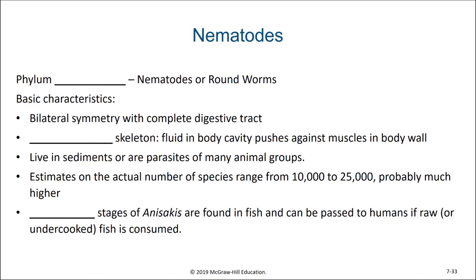Our next phylum of worms are the nematodes, phylum Nematoda. Most nematodes are very small, although some parasitic varieties can be large enough to see and dissect. They are bilaterally symmetrical with a complete digestive system and a hydrostatic skeleton — an internal fluid-filled compartment that body muscles can compress against to allow for movement. Nematodes often live in sediments in marine environments, salt marshes, and terrestrial environments.